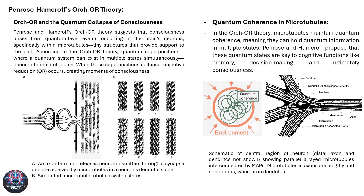The Orchestrated Objective Reduction, or Orch-OR, theory asserts that quantum events within microtubules create the basis for consciousness. As seen in the illustration on the right, microtubules within neurons undergo quantum superpositions, where they exist in multiple states simultaneously. These quantum states collapse through a process known as objective reduction, resulting in moments of conscious experience. This collapse is suggested to be influenced by the geometry of spacetime, linking consciousness to the fabric of the universe itself.